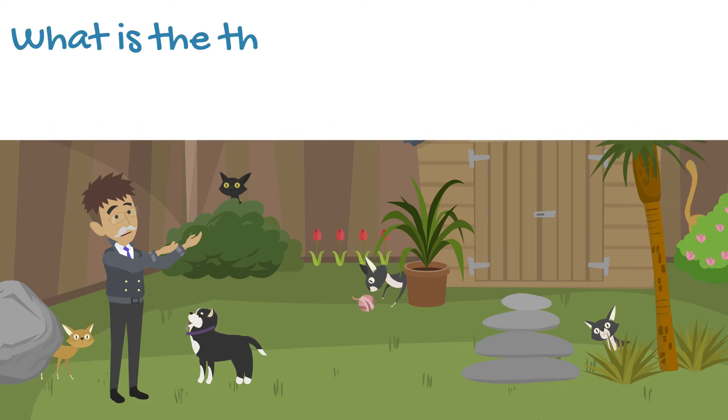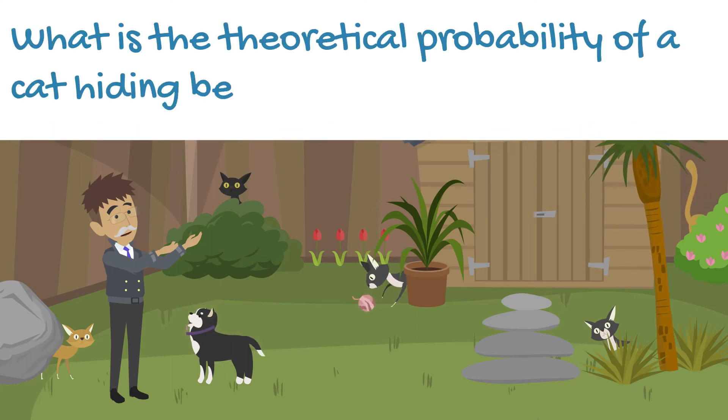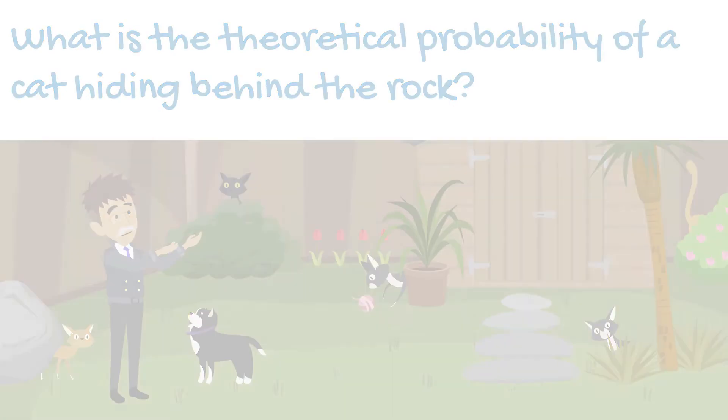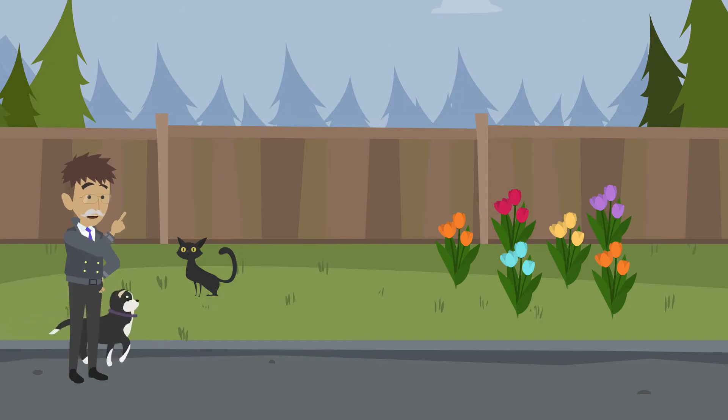What is the theoretical probability that the cat randomly selects the rock to hide behind? Random loves to chase the cats, even though she is too slow to catch up.